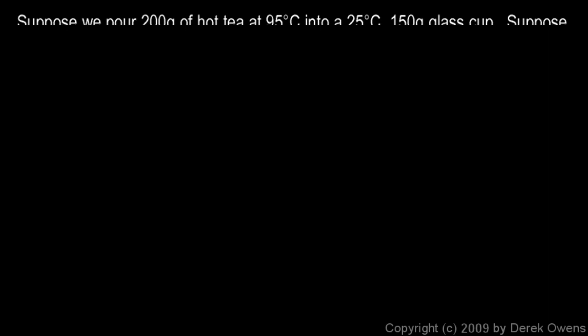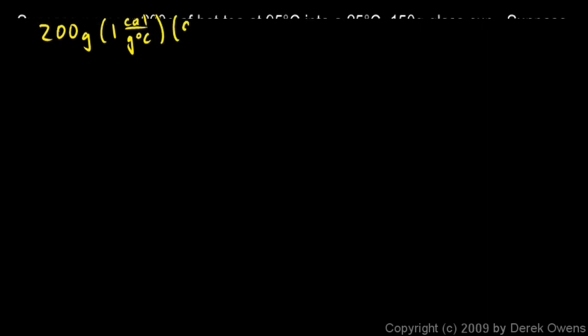The mass of the tea is 200 grams times the specific heat of tea, which is 1. Tea is basically water, so it's 1 calorie per gram degree Celsius times the change in temperature, which is 95 minus Tf.